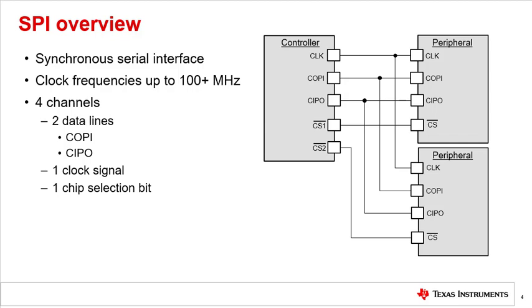The two data lines are typically called Controller Out Peripheral In (COPI) and Controller In Peripheral Out (CIPO). There is also one clock signal channel and an active high/low chip select channel.